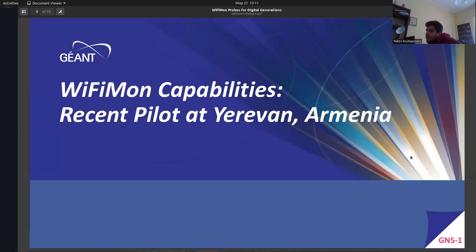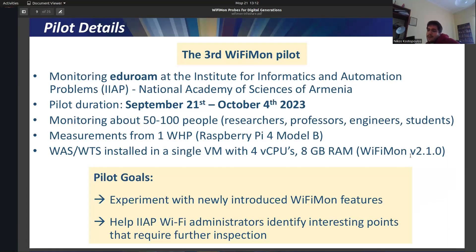Now I'll provide some results from a recent pilot at Yerevan, Armenia, in cooperation with ASNET-AM. This was the third Wi-Fi Mon pilot — the first two were at TNC-19 and TNC-Posium 2020. The third pilot monitored Eduroam at the IIAP, an institute at the National Academy of Sciences of Armenia. The duration was approximately 15 days, monitoring around 50 to 100 people including researchers, professors, engineers, and students — the number increased to 100 during a conference. The setup included one hardware probe, a Raspberry Pi 4 model.